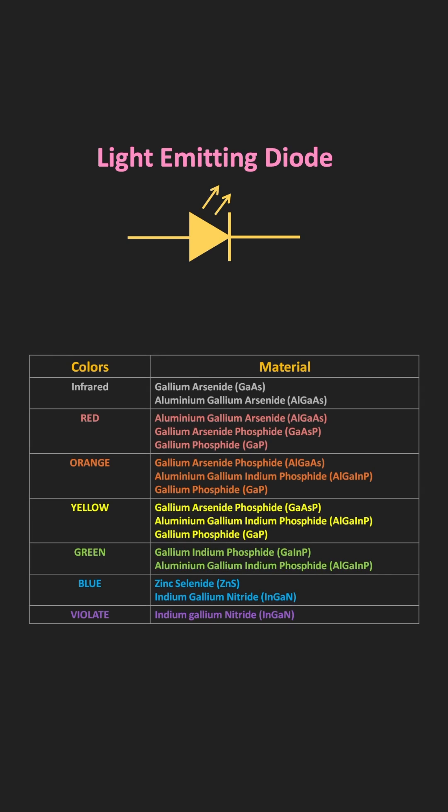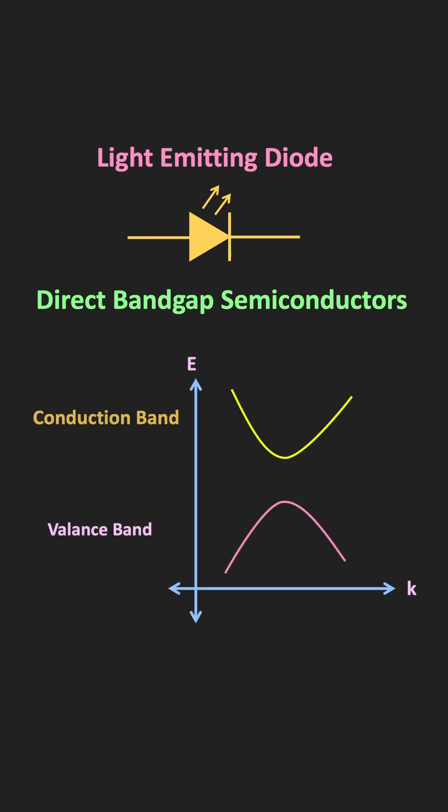These materials are known as direct bandgap semiconductors. Meaning that in these materials, if we see the energy versus momentum curve, the top of the valence band and the bottom of the conduction band have the same momentum value. And because of that, when the electrons from the conduction band combine with the holes in the valence band, they are able to release this additional energy in the form of photons.